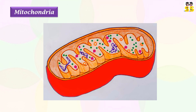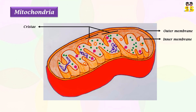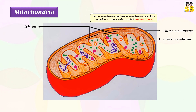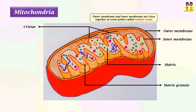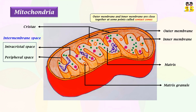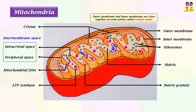The structure of mitochondria is pictured here. Mitochondria contain two major membranes: an outer membrane, which is porous for most molecules, and an inner membrane, which is tightly sealed and has invaginations called cristae. The outer and inner membranes are close together at some points called contact zones. The inner membrane encloses the matrix where the enzymes of the TCA cycle are located. The outer and inner mitochondrial membranes are separated by the intermembrane space, which comprises intercrystal space and peripheral space. Mitochondrial DNA is housed in the matrix, which also accommodates ribosomes. Electron transport complexes and ATP synthase are assembled on the inner membrane.